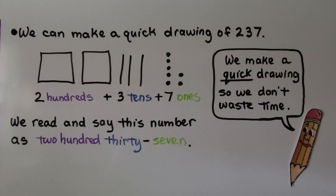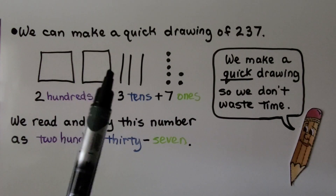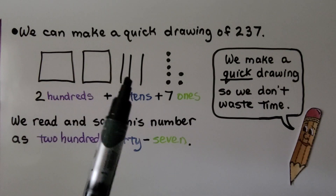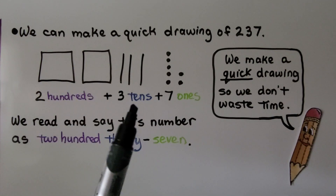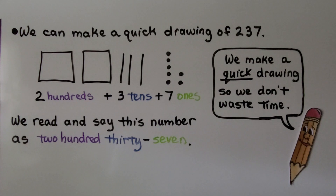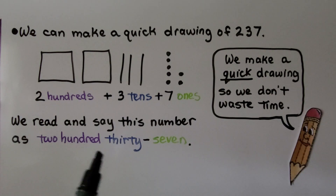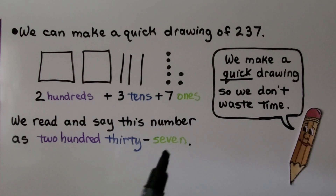We can make a quick drawing of 237. We use two squares for the two hundreds, three lines for the three tens, and seven dots for the seven ones. We make a quick drawing so we don't waste time. We read and say this number as two hundred thirty-seven.